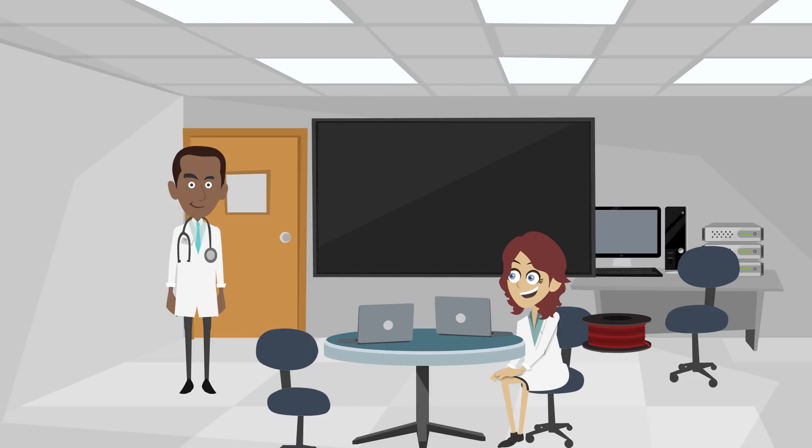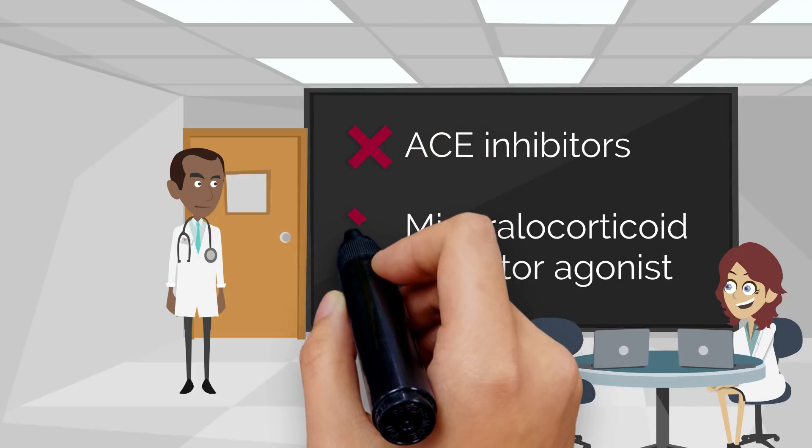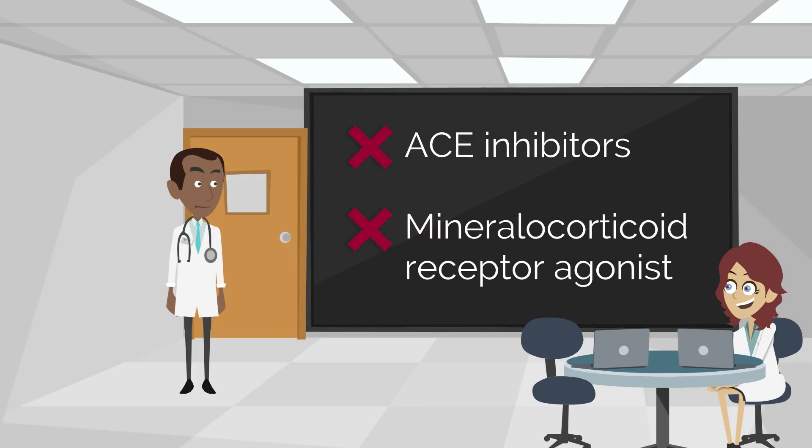Hey, sorry about that, they need me in the ER. Alright, one more thing to know. There are certain antihypertensives we try to avoid in pregnancy. Angiotensin-converting enzyme, or ACE inhibitors, and the related drugs are the first group. They are associated with renal abnormalities when used in the second half of pregnancy. Also, mineralocorticoid receptor agonists, such as spironolactone. The antiandrogenic activity would cause feminization of a male fetus.